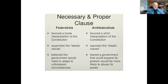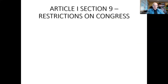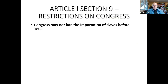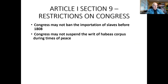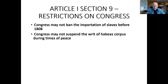Article I, Section 9 places specific restrictions on Congress. It forbids Congress from banning the importation of slaves before 1808. Congress may not suspend the writ of habeas corpus during times of peace — habeas corpus is a protection against arbitrary arrest, requiring a court to show cause why a prisoner is being held — but it may be suspended during times of war or rebellion. The Constitution does not state whether Congress or the president has the power to suspend habeas corpus; this came up during the Civil War when Abraham Lincoln suspended it.